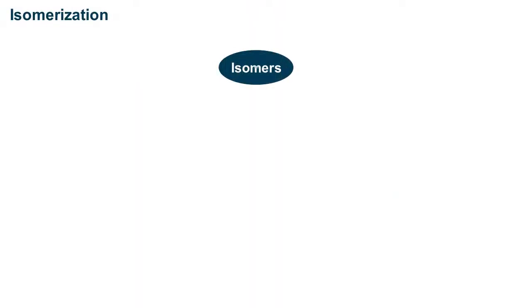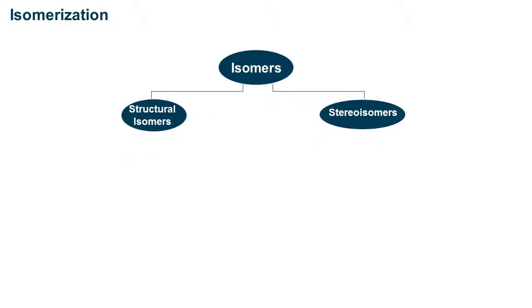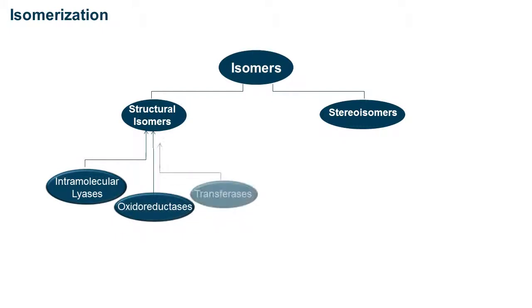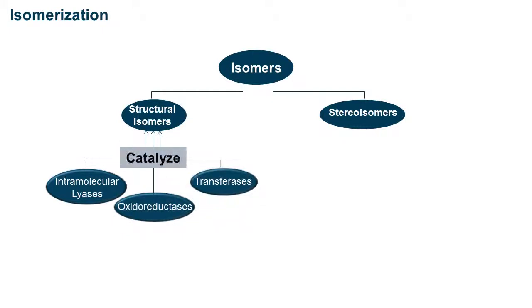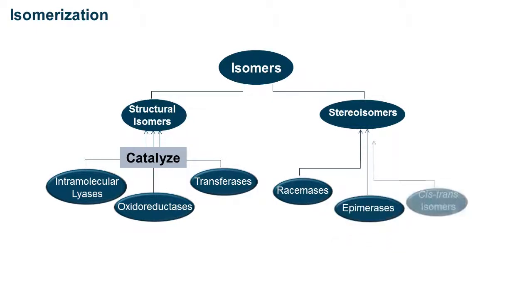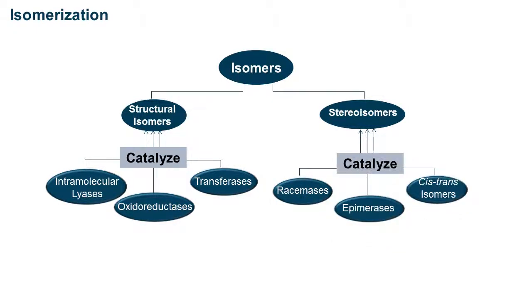Isomers can generally be divided into structural isomers and stereoisomers. Intramolecular lyases, oxidoreductases, and transferases catalyze the interconversion of structural isomers. Racemases, epimerases, and cis-trans isomerases promote the interconversion of stereoisomers.